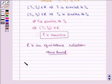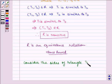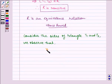Now let us consider the sides of triangles T1 and T3. We observe that 3/6 = 4/8 = 5/10.